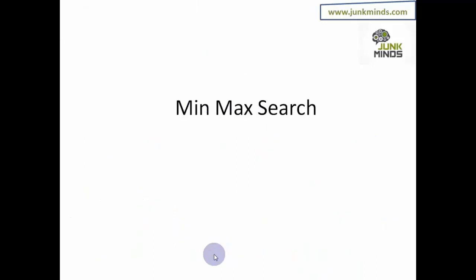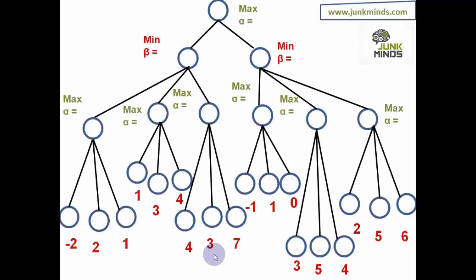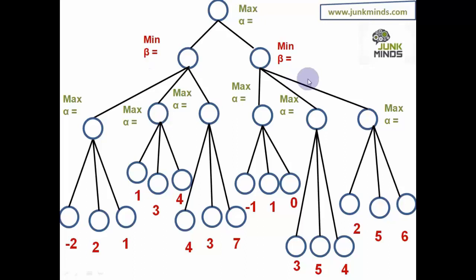Minmax search is one of the simplest things you'll come across in your syllabus. Now, this is the tree where I'm applying minmax search. If I'm the computer, this is my move, the next level is the opponent's move, and the next is my move again. I call it minmax search because I'm trying to maximize my chances of winning and minimize the opponent's chances. So at different levels I write: max, next level is min, next level is max. Wherever I have max I put alpha, and wherever I have min I put beta — I'll use these in alpha-beta cutoff.